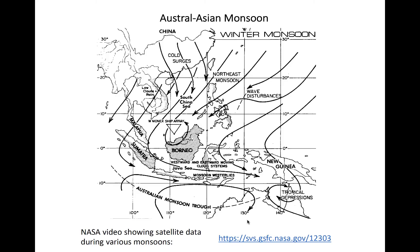During boreal winter, the monsoon circulation reverses as the landmass over Asia becomes relatively cold relative to the tropics in northern Australia. The curved flow across the equator is again expected as Coriolis goes to zero. Topographically induced gyres may form in the South China Sea, and tropical cyclogenesis is also possible in regions of enhanced vorticity near northern Australia. During the winter, the ITCZ shifts southward over the equator and rainfall is more focused over the maritime continent, including northern Australia.